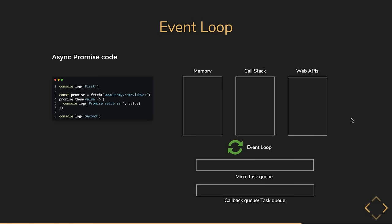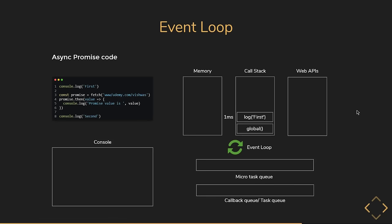JavaScript starts execution in global scope, so global gets pushed onto the stack. Execution comes to line 1 — at one millisecond, console.log is pushed, 'first' is logged, and the function is popped. Execution moves to line 3 — at two milliseconds, the fetch function gets pushed onto the stack.